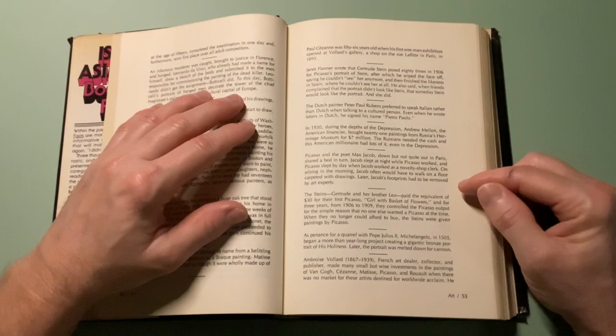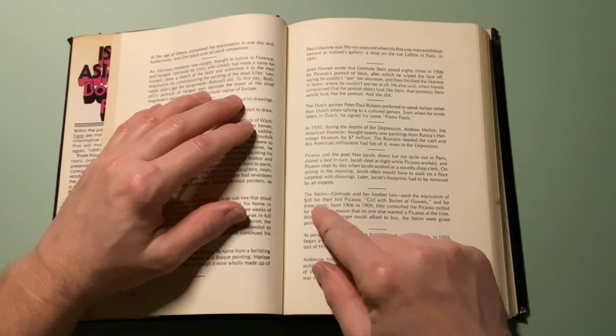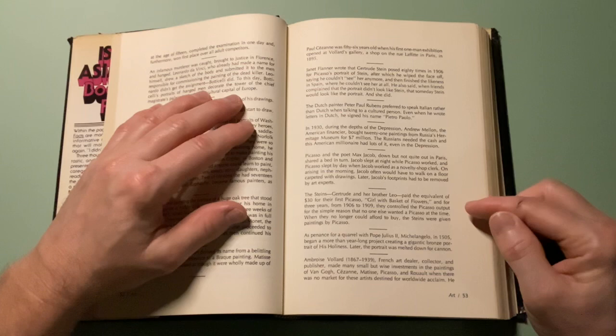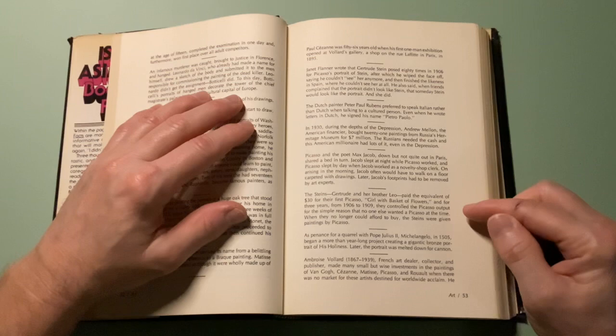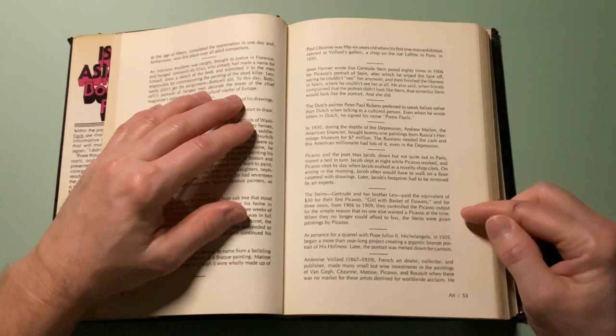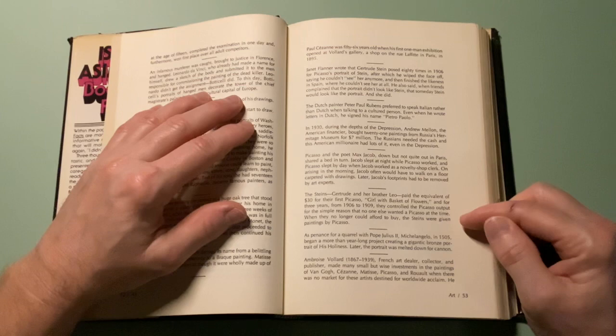The Steins, Gertrude and her brother Leo, paid the equivalent of $30 for their first Picasso, Girl with a Basket of Flowers, and for three years, from 1906 to 1909, they controlled the Picasso output for the simple reason that no one else wanted Picasso at the time. When they no longer could afford to buy, the Steins were given paintings by Picasso.